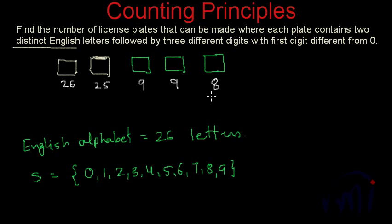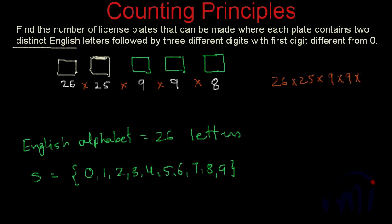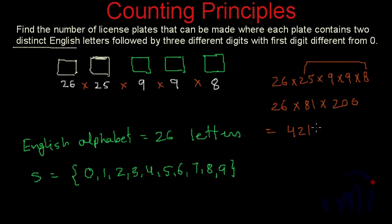All these places are supposed to be filled, which means all these tasks are to be performed one after another — we can't omit any of them. So the total number of choices is found by multiplying the individual choices: 26 multiplied by 25 multiplied by 9 multiplied by 9 multiplied by 8. Here 25 multiplied by 8 is 200, and 9 multiplied by 9 is 81, so 26 multiplied by 81 multiplied by 200 equals 421,200.